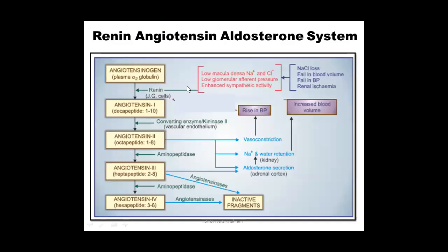To recap the diagram: renin acts on angiotensinogen to form angiotensin 1. The important step is the conversion of angiotensin 1 to angiotensin 2 by the ACE enzyme, otherwise called kininase 2. Angiotensin 2 then exerts its effects through AT1 receptors. After that, it is converted to angiotensin 3 and 4 and then to inactive fragments. This later area is less important.